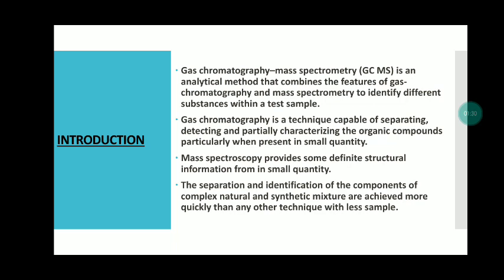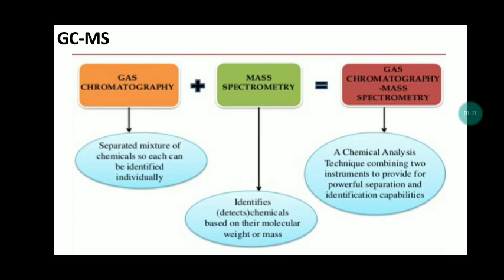Let us move to the next slide. This is a layout of the GCMS showing what the GC instrument and mass spectrometer do. Gas chromatography separates the mixture of chemicals so that each can be identified individually, and the mass spectrometer identifies or detects chemicals based on their molecular weight or masses.